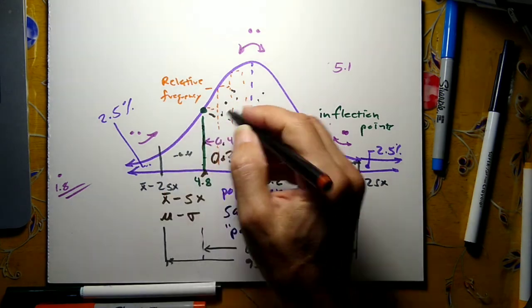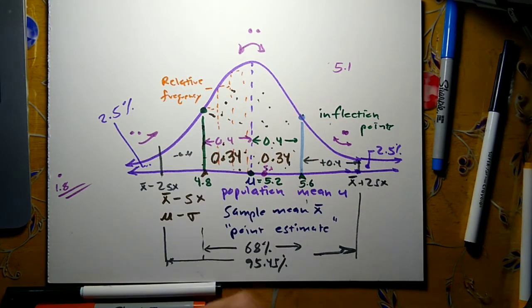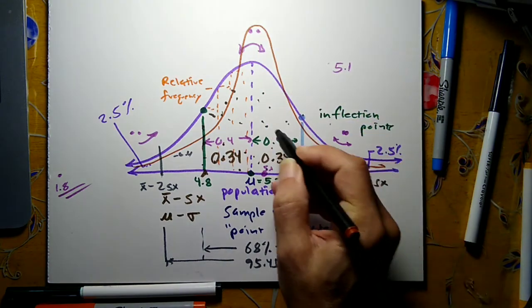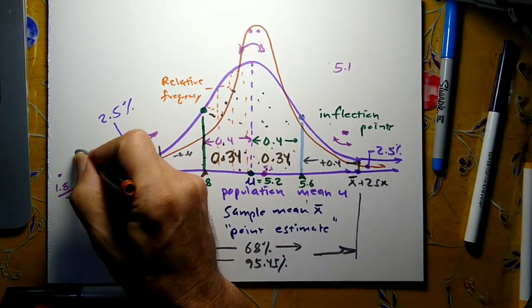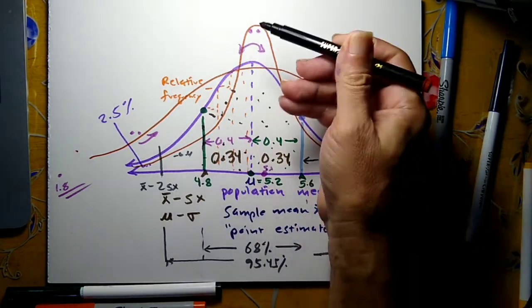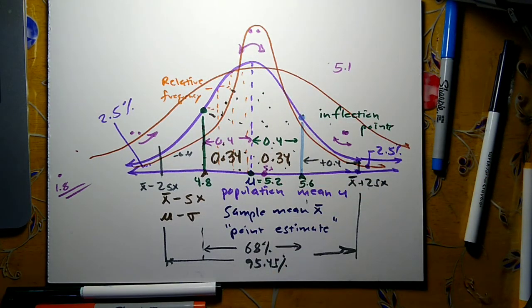So if you have a smaller standard deviation, you might see a narrower, taller normal curve. And if you have a larger standard deviation, the inflection points occur out farther and you'll get a little bit lower, flatter curve. That's a really rough estimate and a messy diagram at this point.